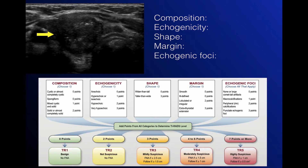Next we have a nodule that looks far more suspicious. The composition is again solid, so it receives 2 points. Echogenicity this time is very hypoechoic, relative to the strap muscles. The shape is not taller than wide. The margin is ill-defined, so zero points — it's quite hard to evaluate the margin on this one image. There are small punctate echogenic foci, so it receives 3 points for that. The total is 8 points, putting it into a TIRADS 5 lesion: FNA if 1 cm or greater, follow-up if 0.5 cm or greater.